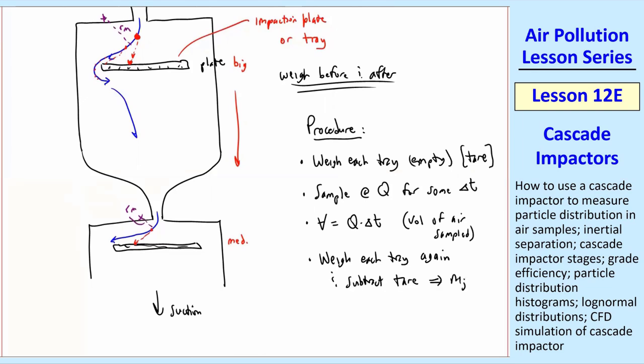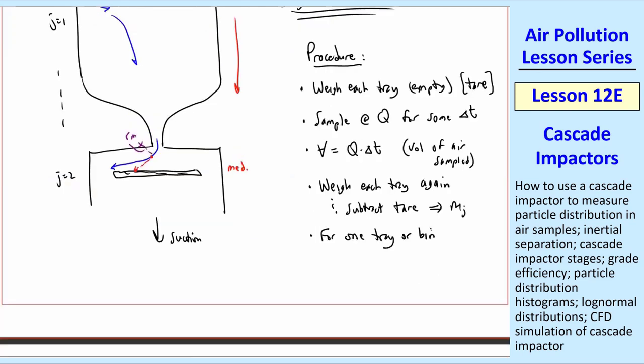And that way you get MJ, the mass of the particles on that particular tray J. We'll just call that J equal one, J equal two, et cetera. For one tray or bin, we also call that a bin, we have CJ. Mass concentration is MJ of that tray divided by Q delta T. So we have mass over volume, since the volume is Q delta T, and that's our mass concentration for bin number J. And then you'd repeat that for all the bins.